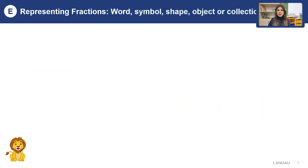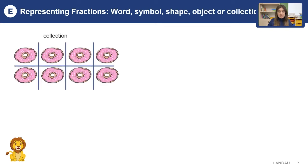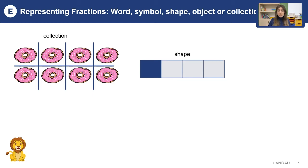As you know, we can represent fractions by the help of words, symbols, shapes, objects, or collections. Let's start with collections — can you see the delicious donuts in the picture? They show us one eighth because they are divided into eight pieces. On the next part, you can see the shape — it shows one fourth because just one part is blue out of four. And we can represent fractions by words as well, for example, 'half', written out in letters.